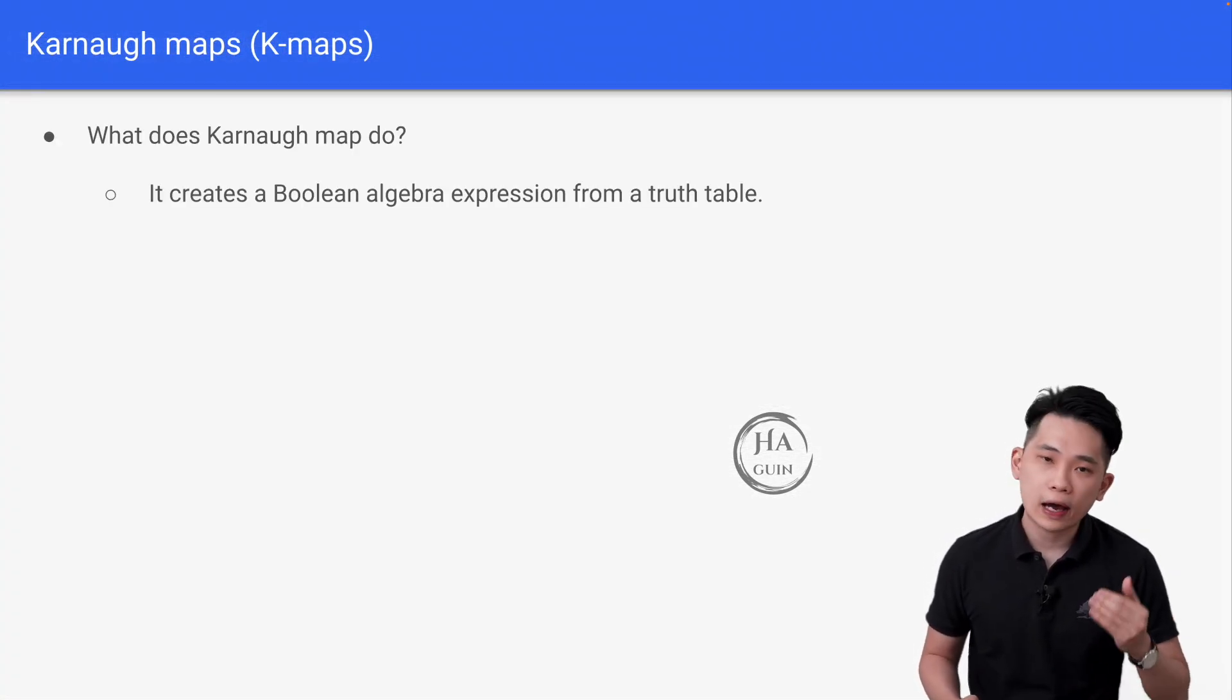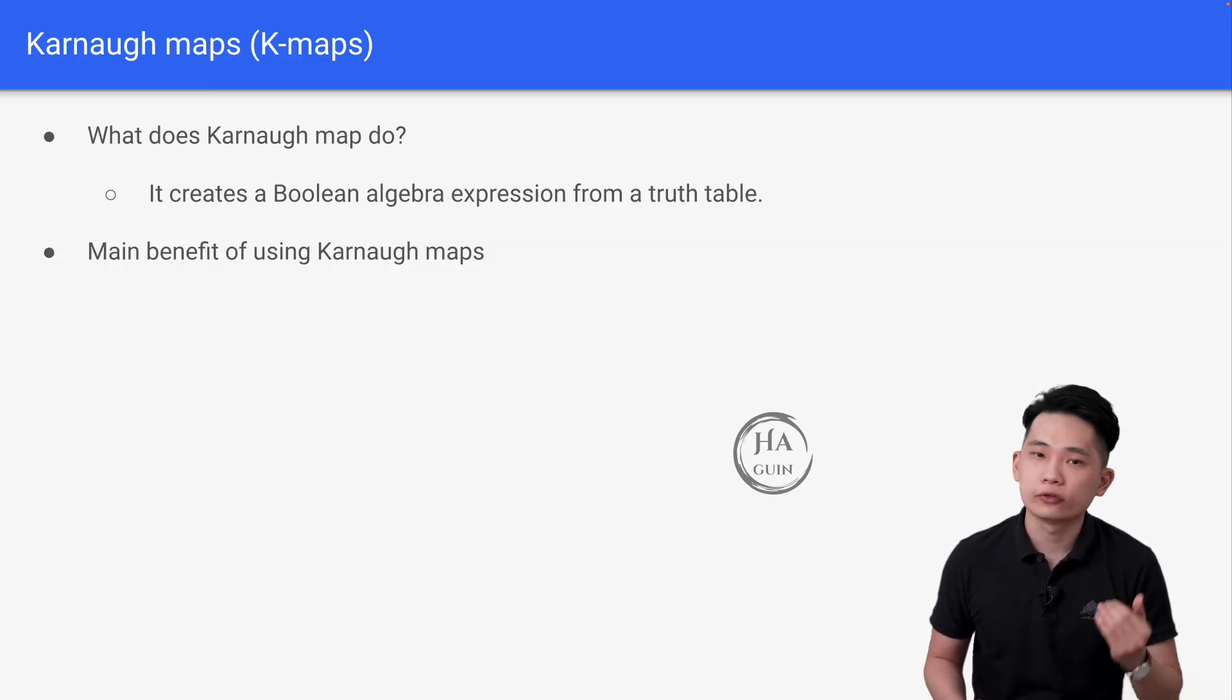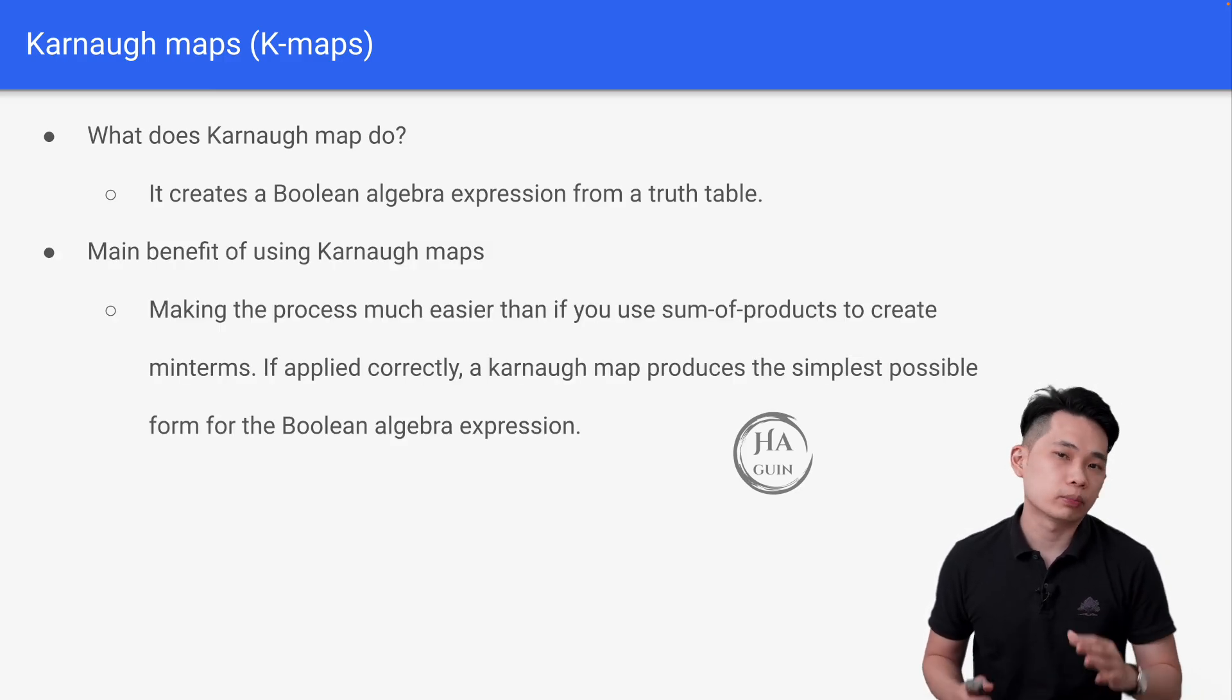It creates a Boolean algebra expression from a truth table, and the main benefit of using Karnaugh maps is making the process much easier than if you use sum of products to create min terms. If applied correctly, a Karnaugh map produces the simplest possible form for the Boolean algebra expression.